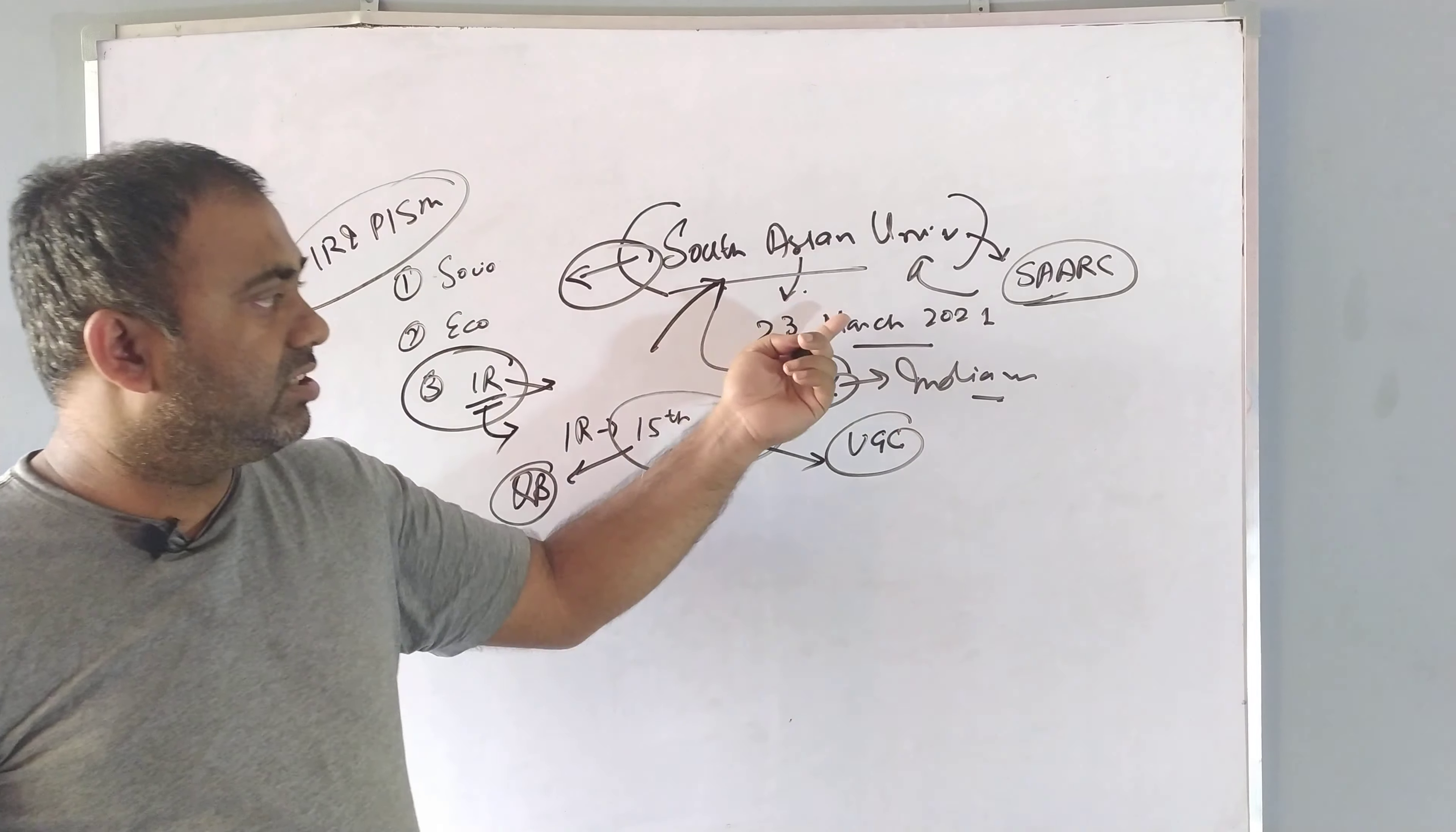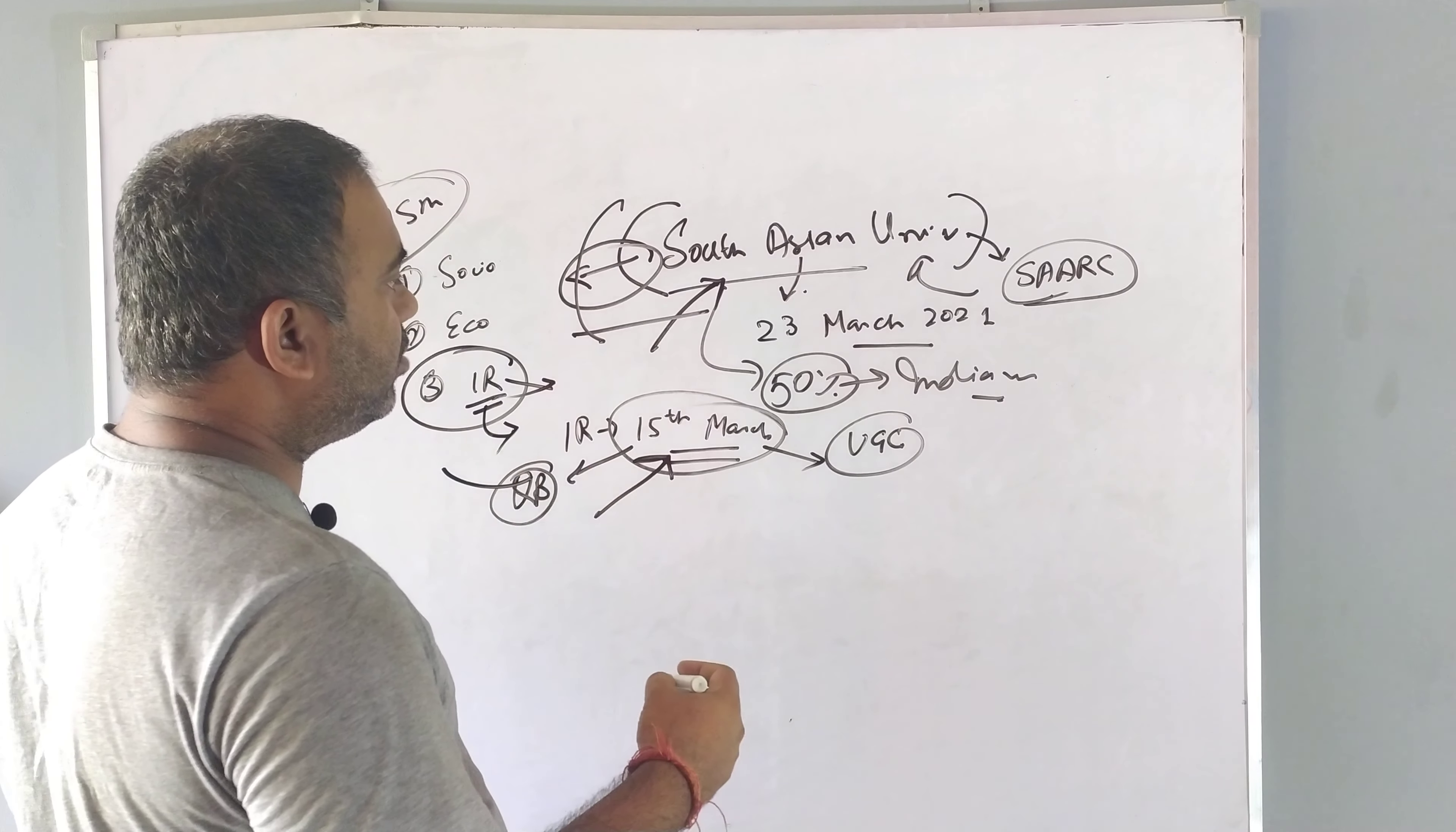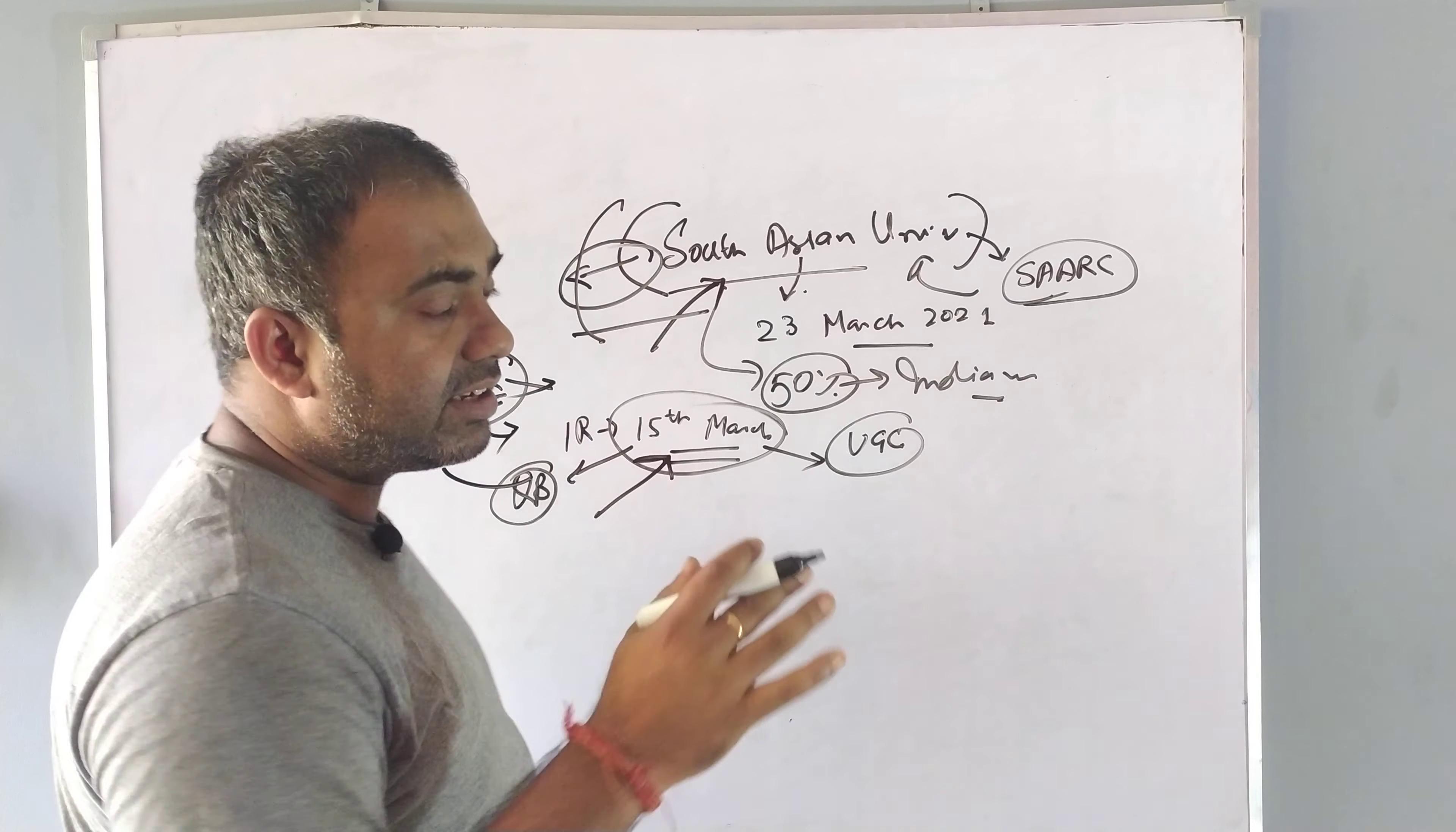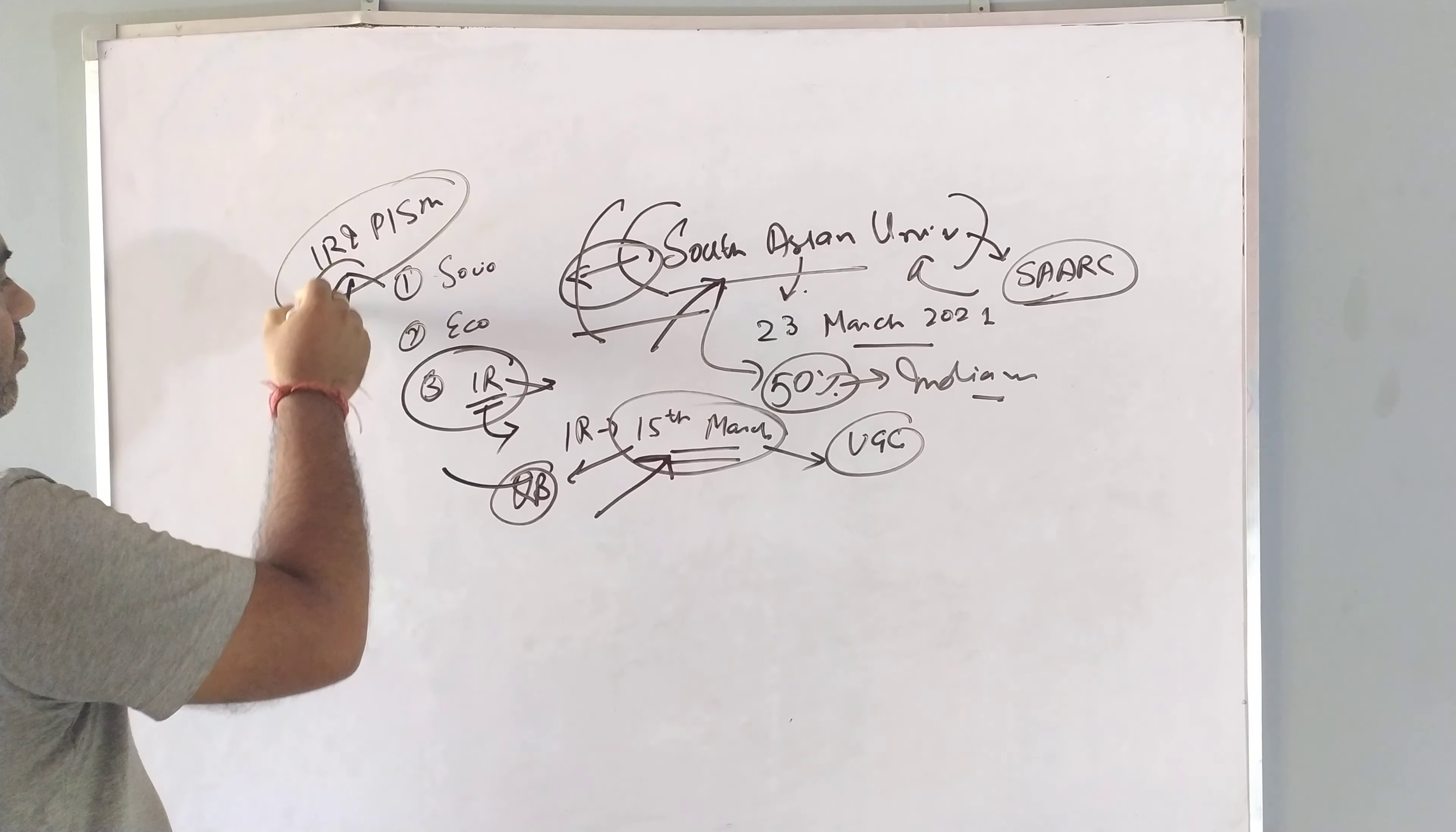If you need the test series, now you can see what is the question pattern. There are two different sections. One section is where South Asian University has more focus on the different nations. Along with that, there is another major section that is similar to JNU IR or Jamia IR. The test series will cover up 100%. Whether it is IR theories, international organizations, or world history, all the test series that we provide will cover it.